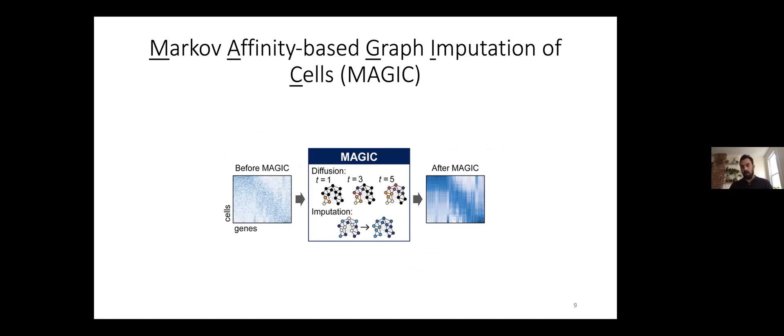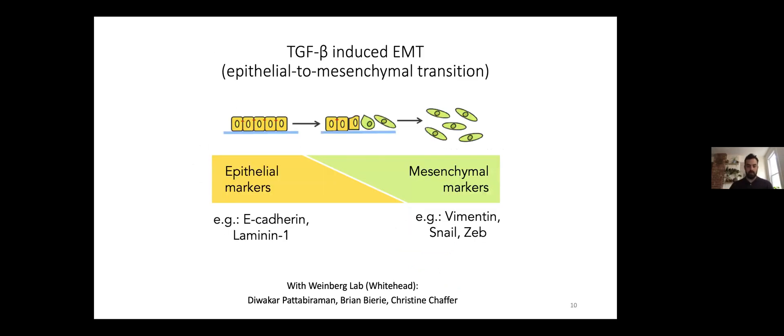Since we're doing Markov affinity-based graph computation, we call the algorithm MAGIC. We applied our algorithm to an epithelium mesenchymal transition data set, measuring approximately 20,000 single cells from a breast cancer cell line that we induce with TGF-beta to undergo this EMT transition. The cells originally are epithelial cells, but when you stimulate them with TGF-beta they gradually transition towards mesenchymal cells. This process, EMT, is a very fundamental process in biology involved in both healthy and disease processes—in development and wound healing for healthy processes, and in cancer metastasis for diseases.